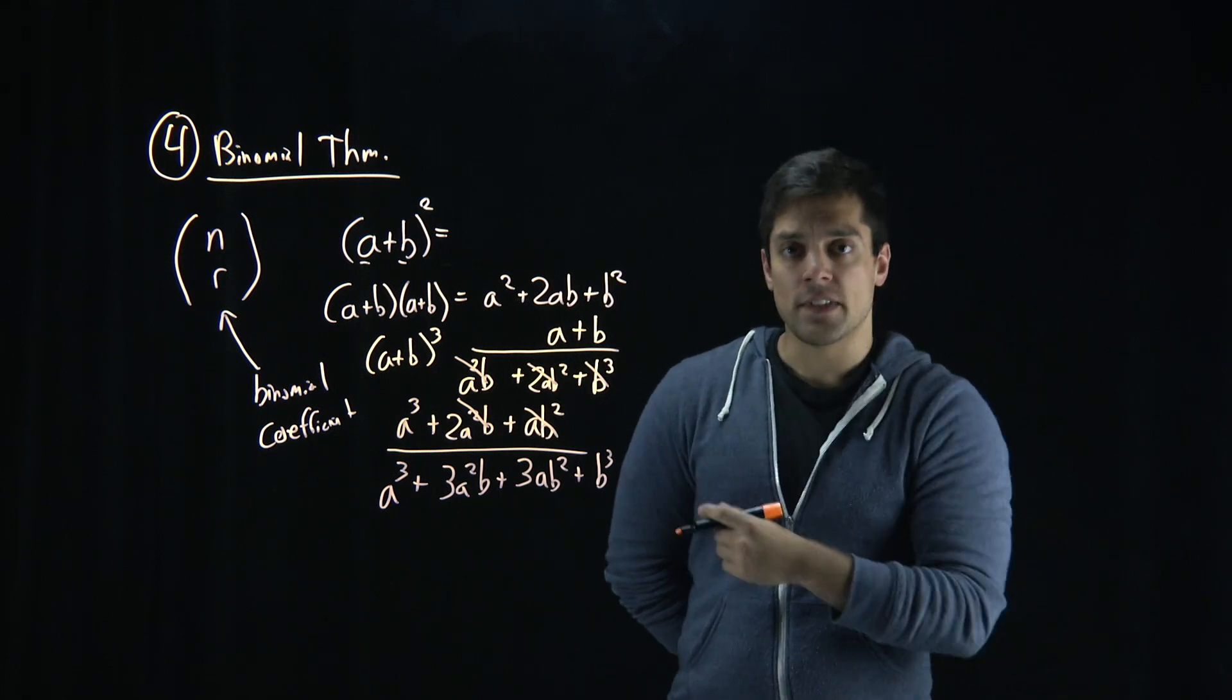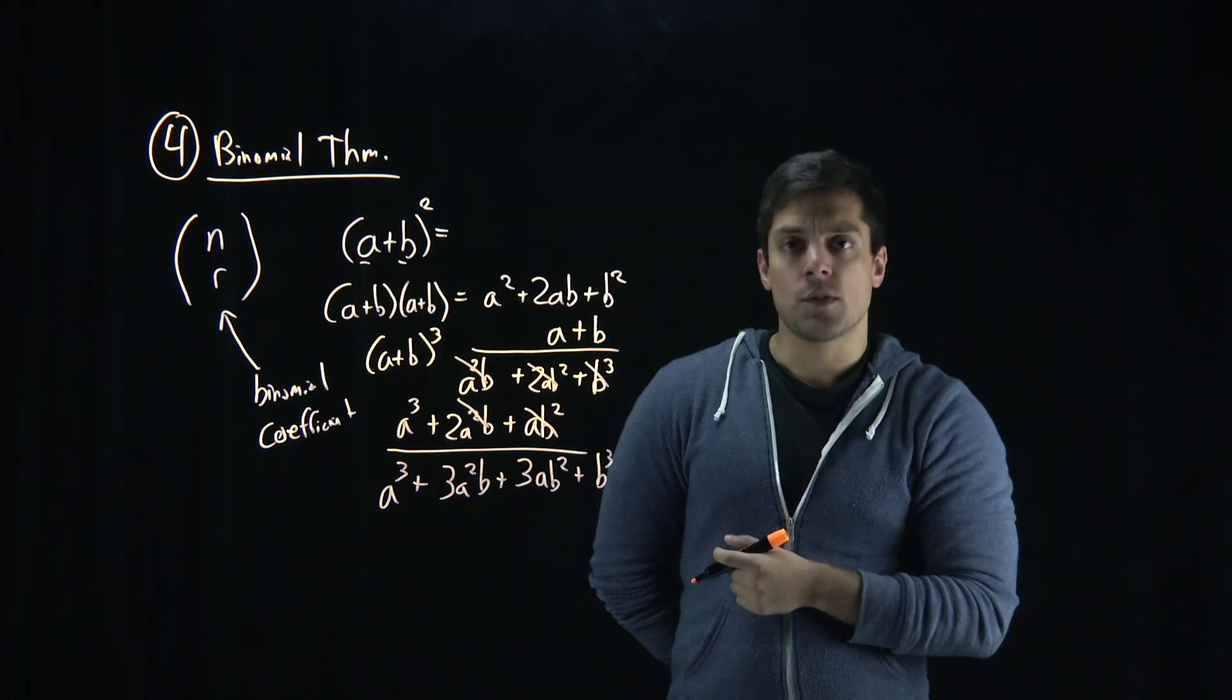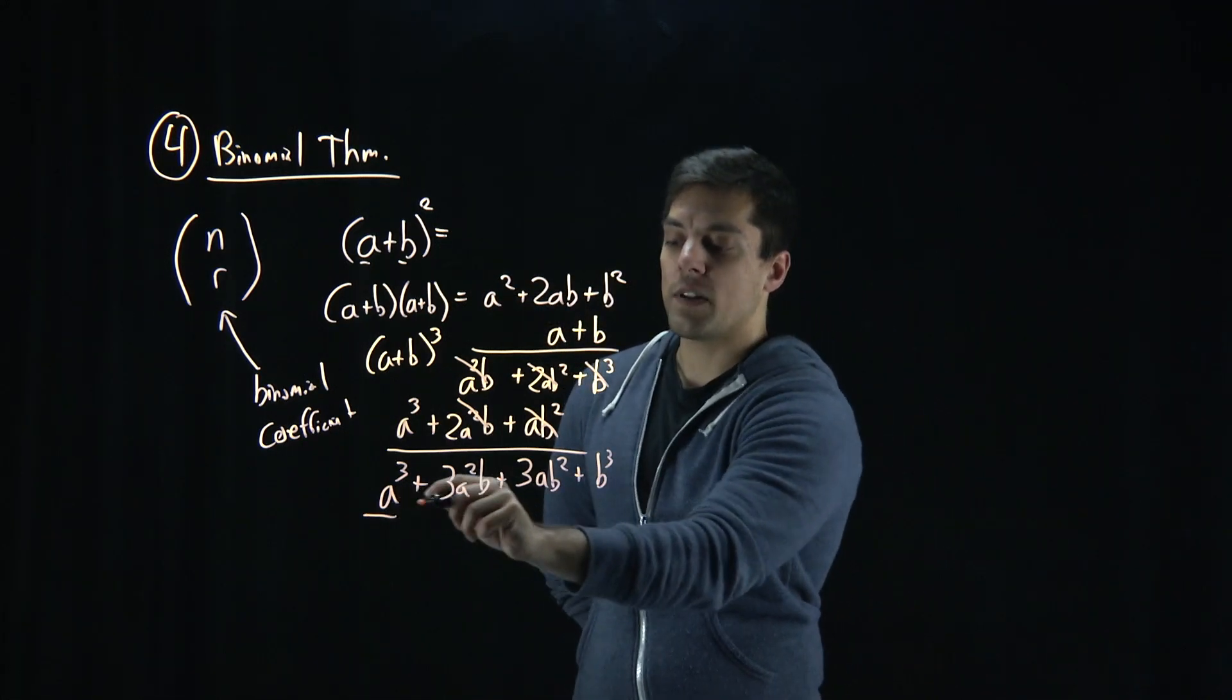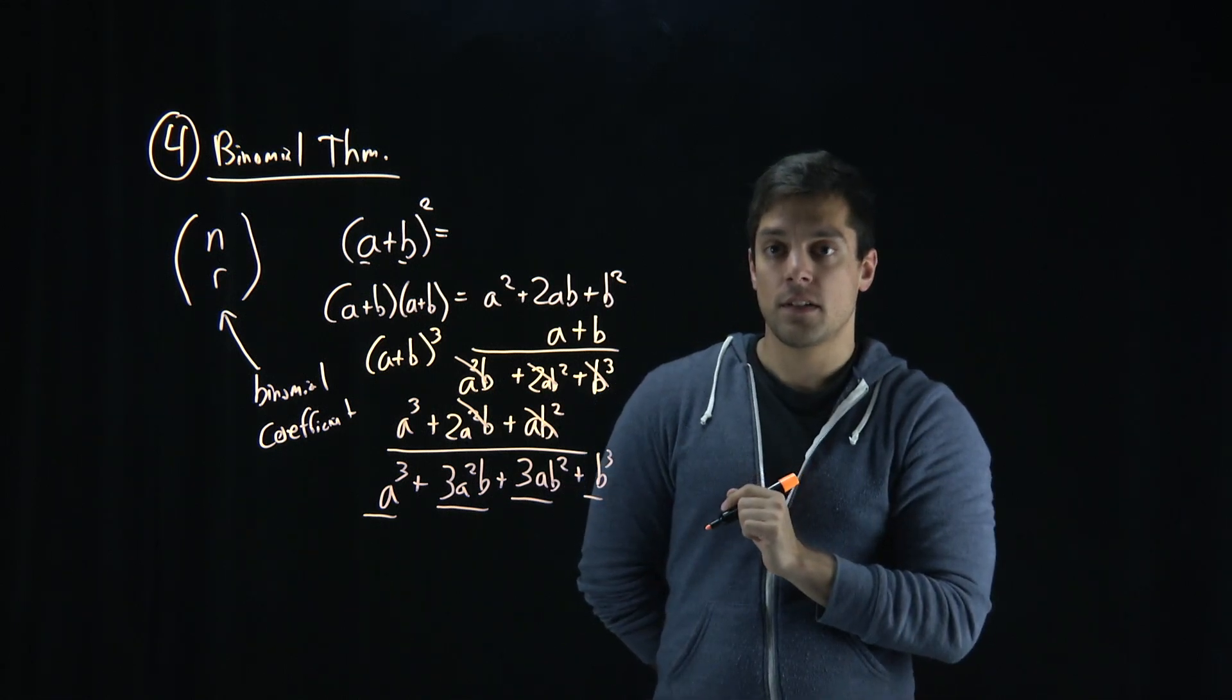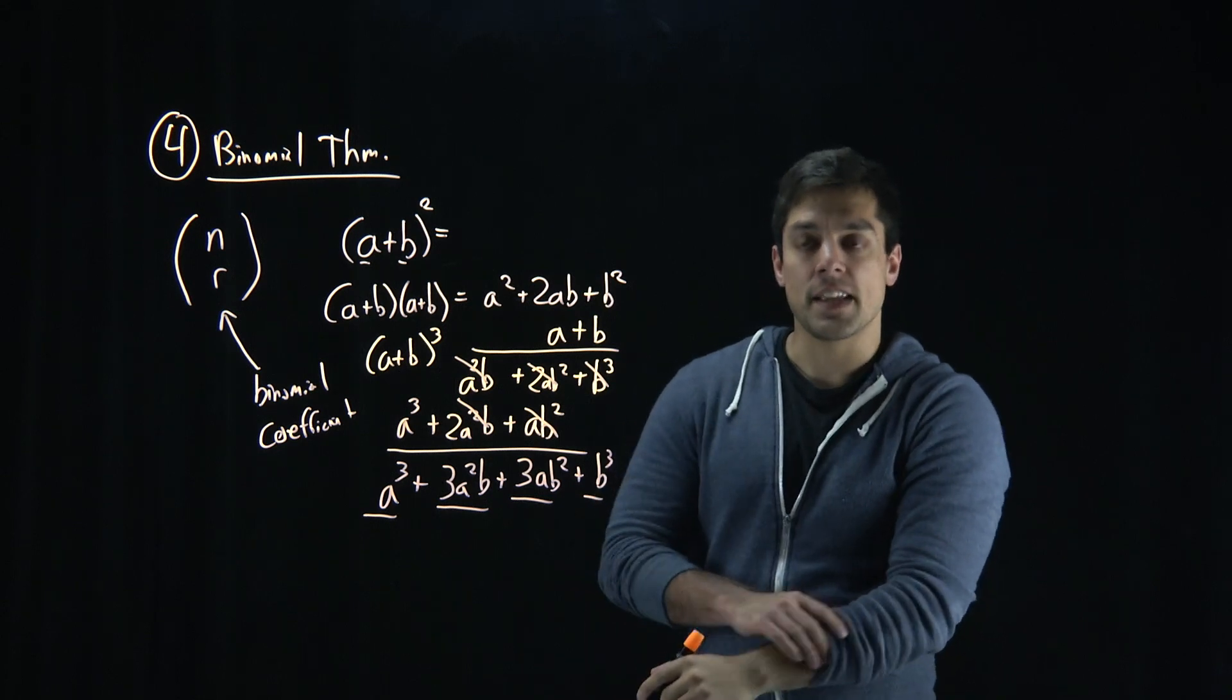Now, as you can tell with a lot of this addition and multiplication, there's room for error. So what we have is the binomial theorem, which can help us compute what each of these terms are in an equation. So let me go ahead and write the binomial theorem right here so we can see how it works.